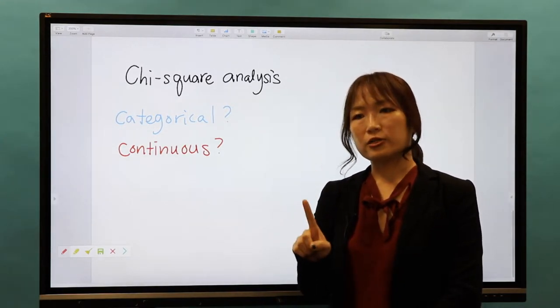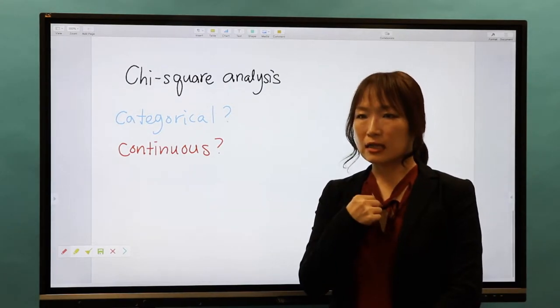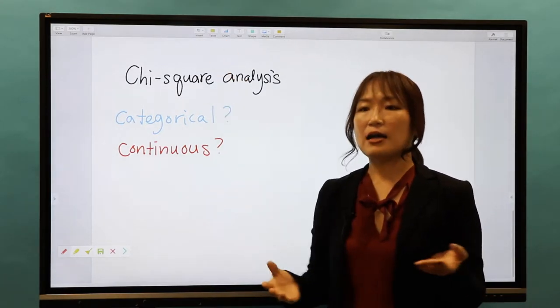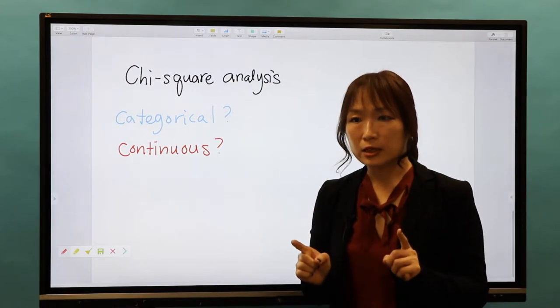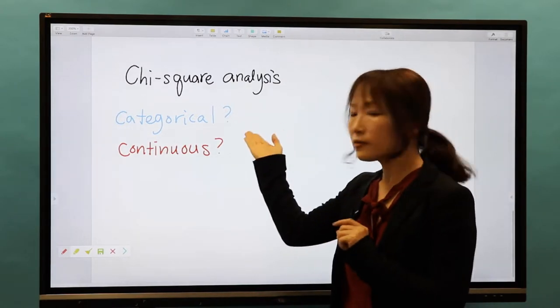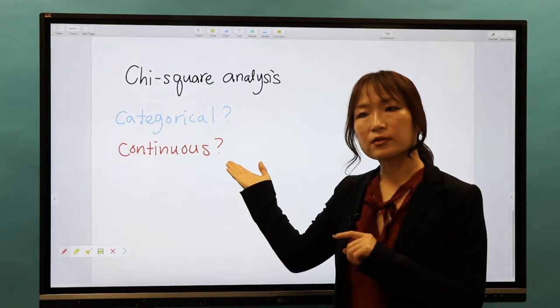Here's my next question. If I'm studying how tall my students are and I measure them in centimeters, is that a categorical variable or a continuous variable, and why?